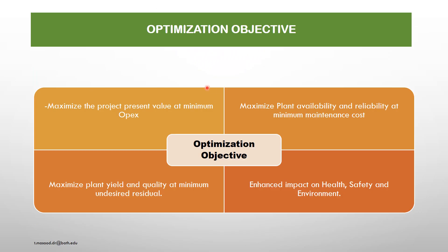I'm going to demonstrate the optimization objective — why we need to do optimization. First, to maximize the project present value at minimum OPEX. Second, maximize plant availability and reliability at minimum maintenance cost. Third, maximize plant yield and quality at minimum undesired conditions. Fourth, enhance impact on health, safety, and environment. These four factors are the backbone of process optimization.